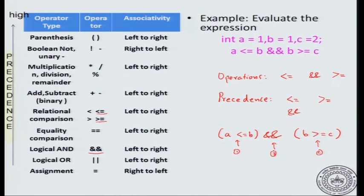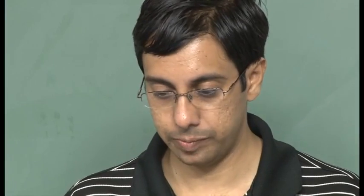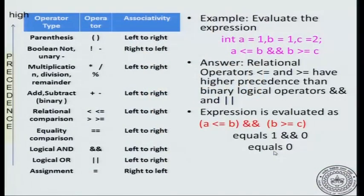Conceptually, using just precedence and associativity rules, this is how the expression should be evaluated. When we evaluate it: a less than or equal to b is 1 <= 1, so that is 1. b greater than or equal to c is 1 >= 2, so that is 0. So this becomes 1 AND 0, which is 0. Now let us look at a few tricky examples.